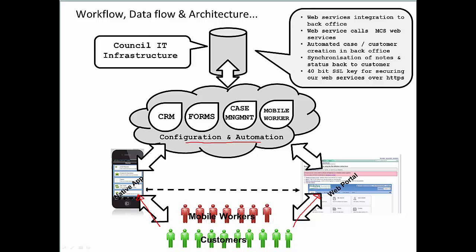When a customer raises a service request through any of these channels, the associated data finds its way into the appropriate parts of your IT infrastructure safely and securely — that could be a back-office specialist system. Those integrations are typically enabled through web services and are therefore dual-direction, so when a case is updated internally in the authority, you can configure the integration to ensure the customer knows it's been moved ahead and updated. We also offer tools to encompass some of the less structured and unmediated social media channels.